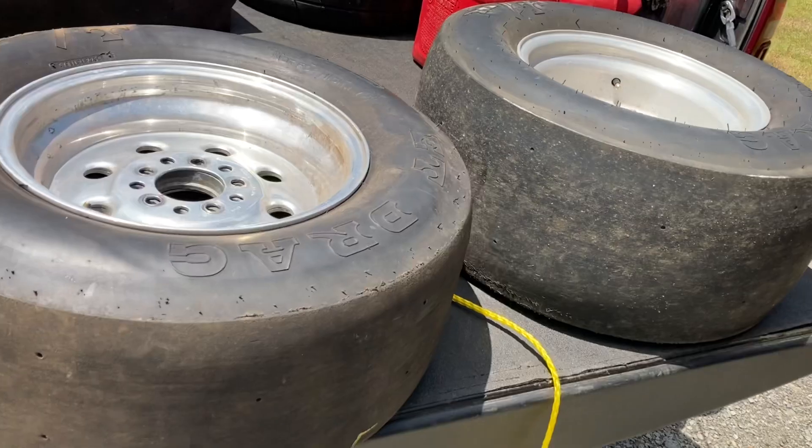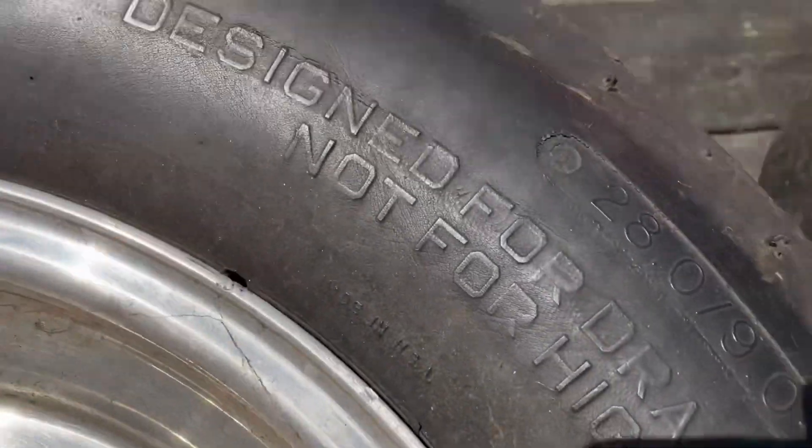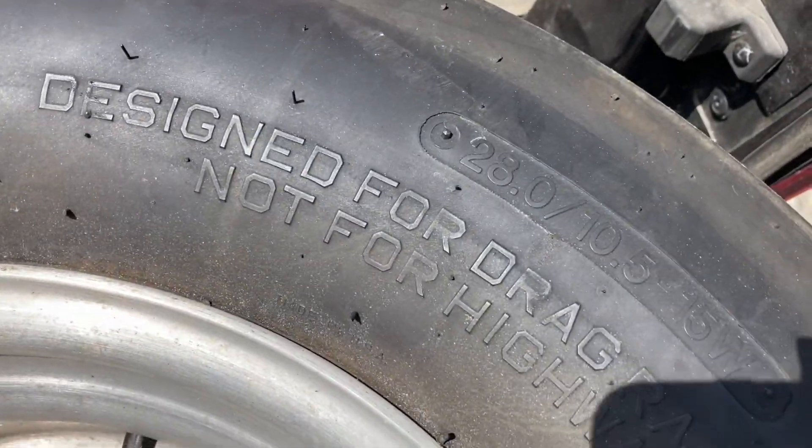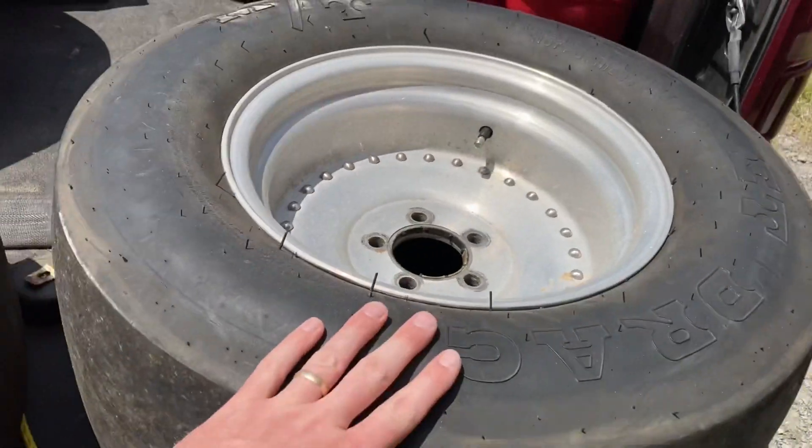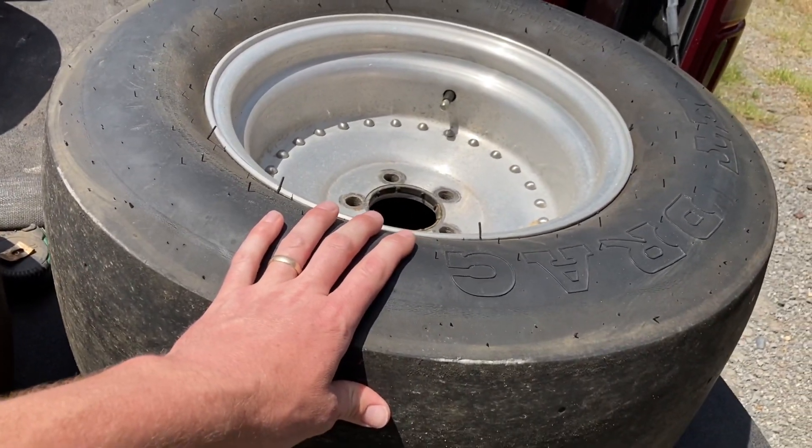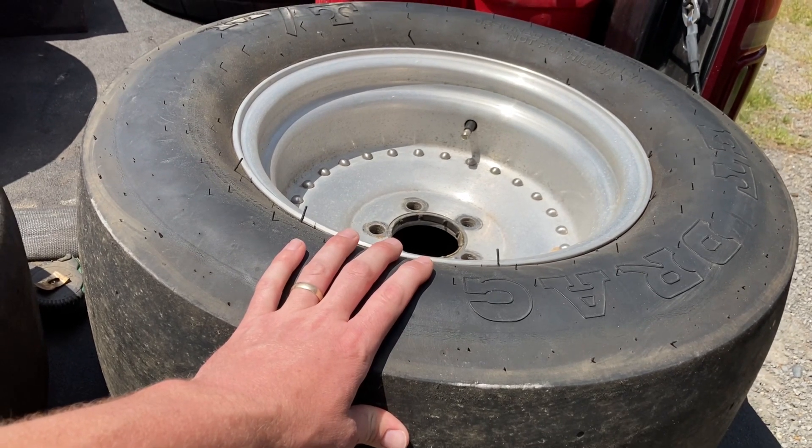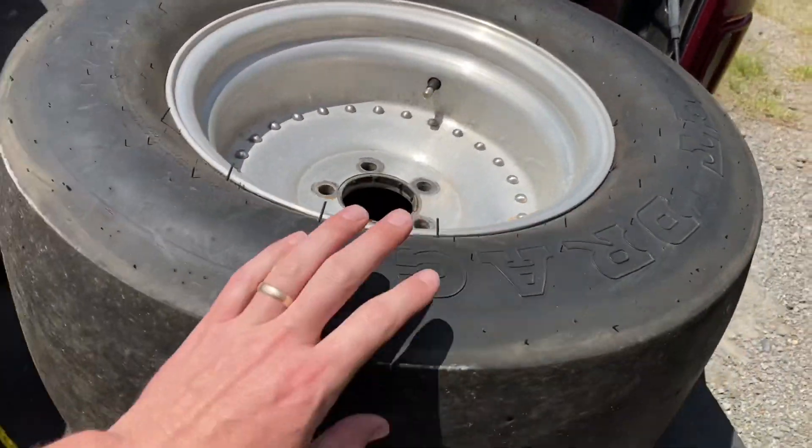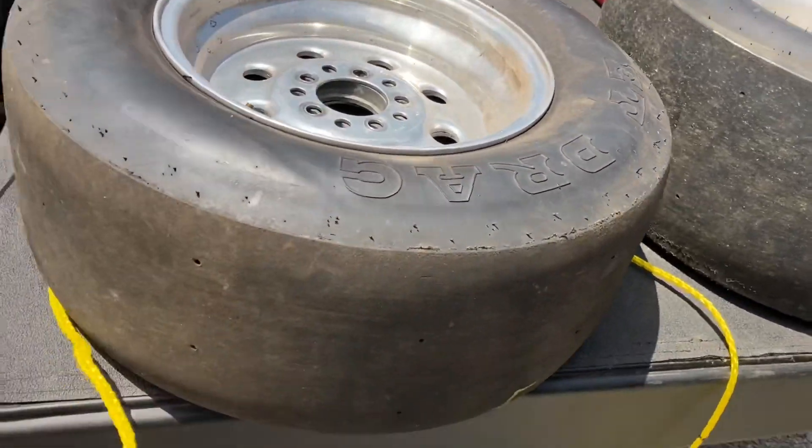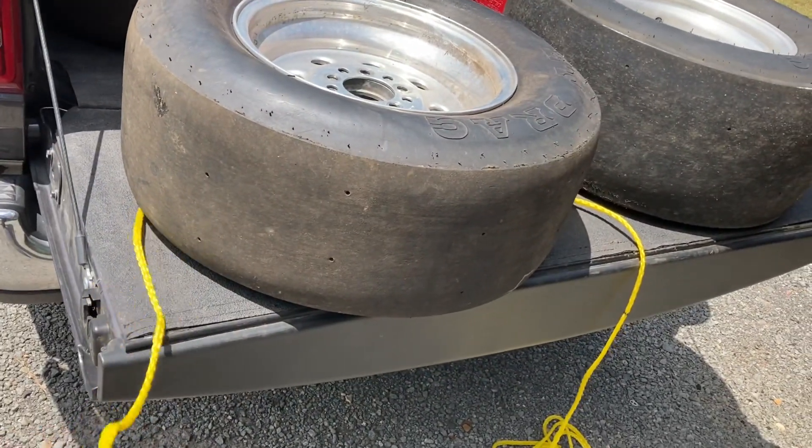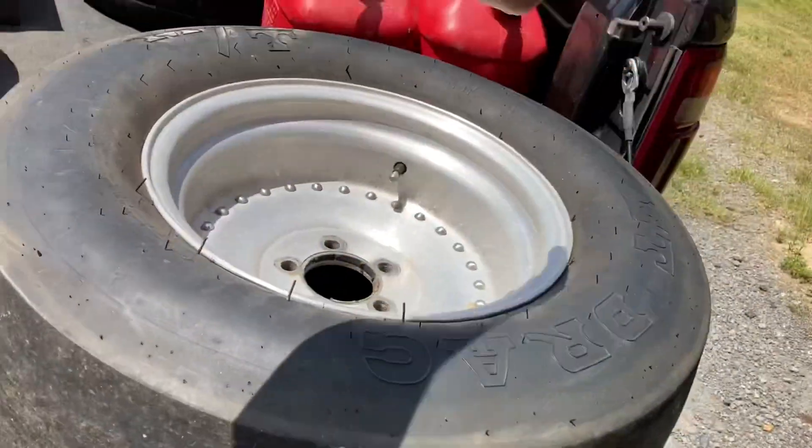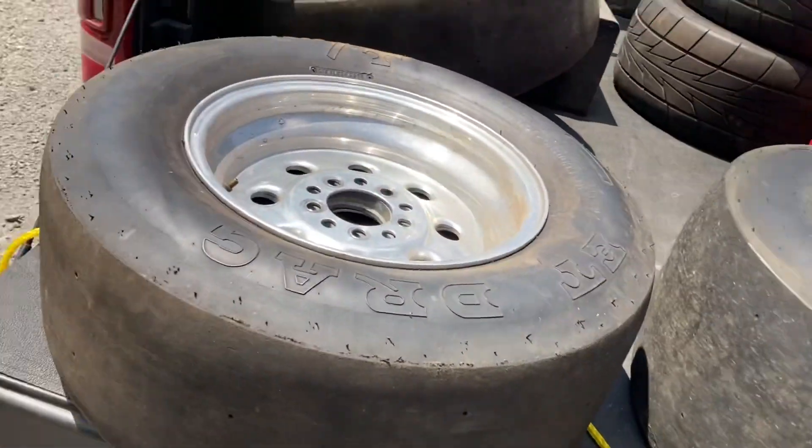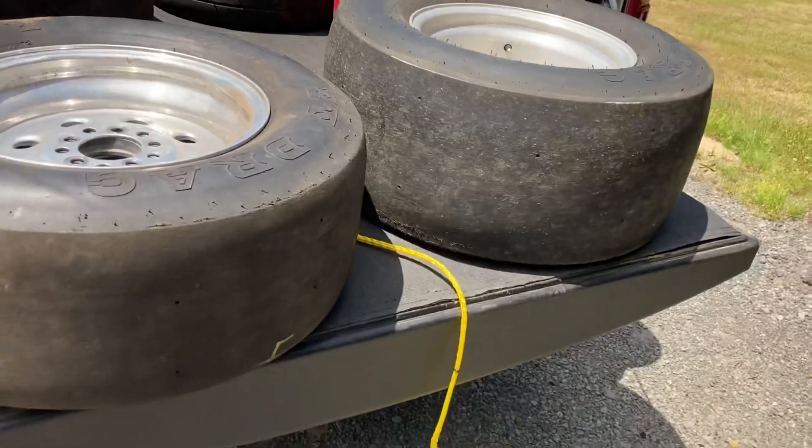Tires here, they are both Mickey Thompson ET drag slicks. One is a 28 by 9.15. The other is a 28, 10.5, 15 W. This is the actual wheels and tires that came off the back of my Barracuda, and I swapped to a Hoosier 29, 10.5. So just because it says 29 and this says 28 does not mean that the tire is actually an inch taller. How do you determine it? I just got me a piece of nylon rope here. A piece of twine or string would be fine too, and I'm going to go around, measure the outside of that tire, the circumference, and figure it out from there. But both these tires are 28s. They should be the same. Let me show you that they are not.